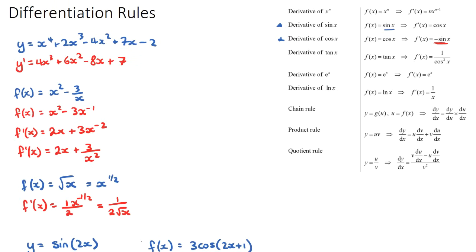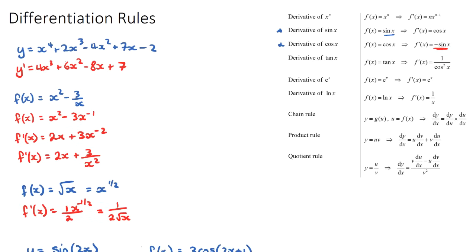The derivative of tan is not asked very frequently, but the formula is: the derivative of tan x is 1 over cos squared x. You may see in your textbook that this comes from applying the quotient rule to sin x over cos x.